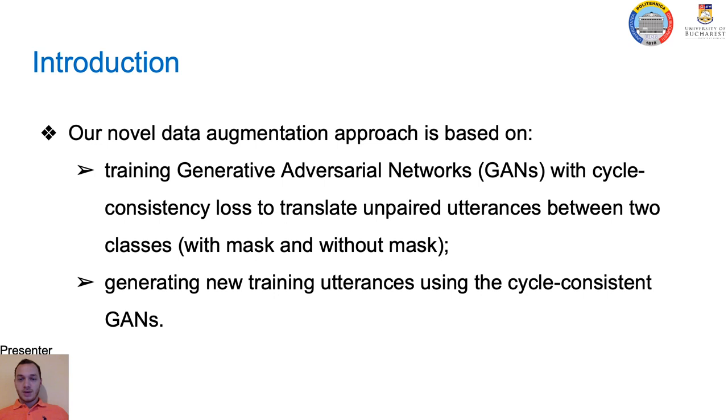In this paper we propose a novel data augmentation approach for mask detection from speech. Our approach is based on training generative adversarial networks with cycle consistency loss to translate unpaired utterances between two classes, with mask and without mask, and on generating new training utterances using the cycle consistent GANs, assigning opposite labels to each translated utterance.